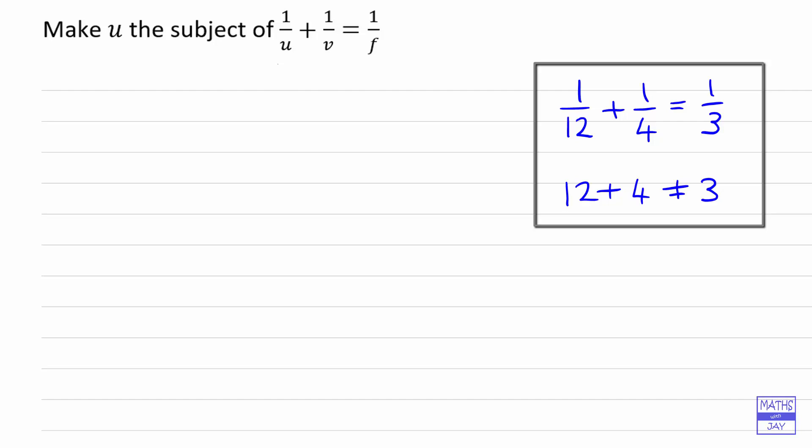So we're trying to make U the subject, so to begin with we'll make one over U the subject. All we need to do there is subtract one over V from both sides, so one over U is one over F minus one over V.